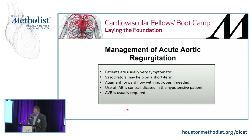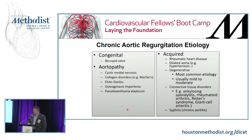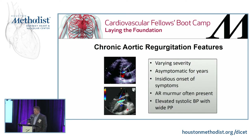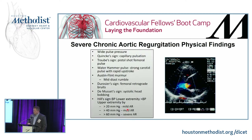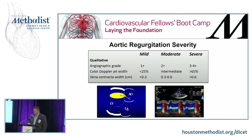Management of acute aortic regurgitation: patients are usually very symptomatic. Vasodilators may help in the short term; you can augment forward flow with inotropes if needed. Use of a balloon pump is typically contraindicated in a hypotensive patient, and aortic valve replacement is typically required. Chronic aortic insufficiency can be from bicuspid aortic valve, collagen disorders, or dilation from an aortic aneurysm. There is typically a long asymptomatic period, insidious onset of symptoms, an aortic insufficiency murmur, elevated systolic blood pressure, and still a wide pulse pressure.